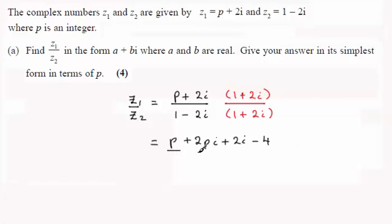And this is all divided by and what we've got down here is basically the difference of two squares. So you just end up with squaring the 1 which is 1 and then you've got minus 2i times plus 2i which is going to be minus 4i squared which is plus 4 since i squared is minus 1.